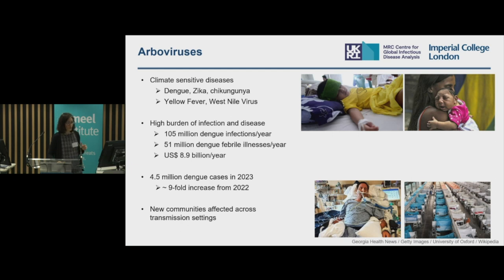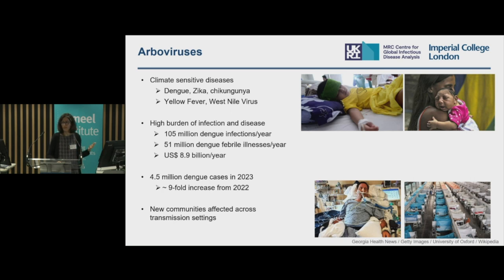To give you a sense of the rising number of cases of dengue: these have increased over the years, and just from last year to this year there has been a ninefold increase in the number of cases reported. Clearly this isn't just driven by improved surveillance and reporting — there is something else ongoing, and new communities are affected across all transmission settings. In Brazil, 481 new communities where dengue hadn't been circulating ever have detected new dengue infections over the last few years.